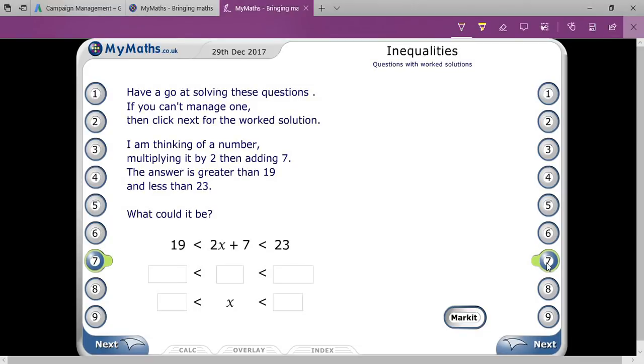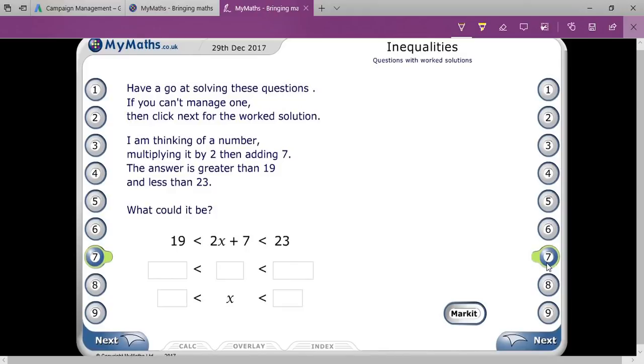Let the number equal X. Firstly they are saying that multiply it by 2, so that is, multiply by 2, so that means it will be 2X.